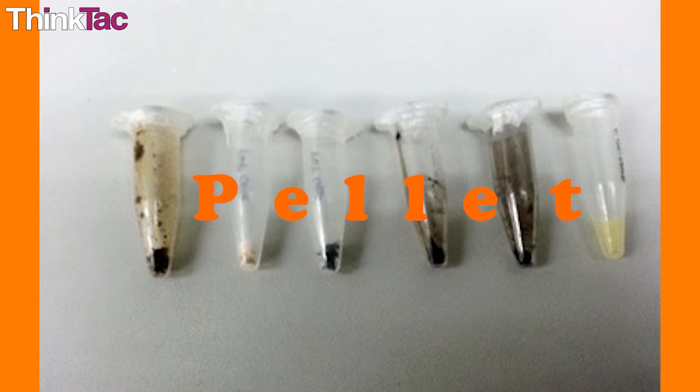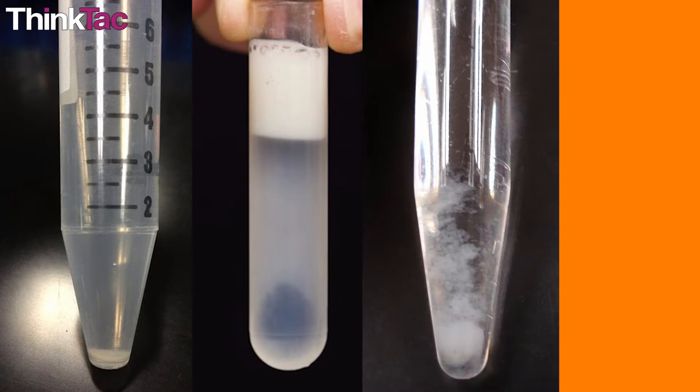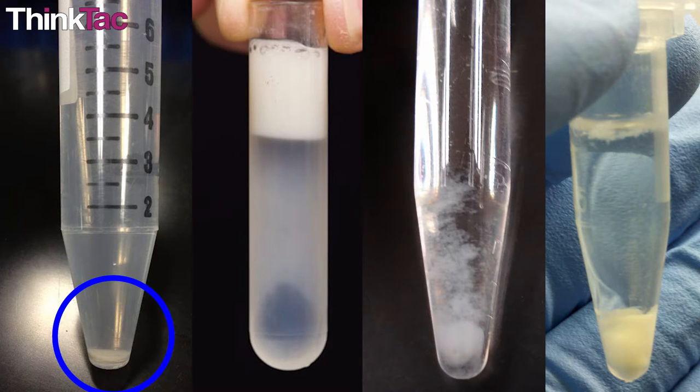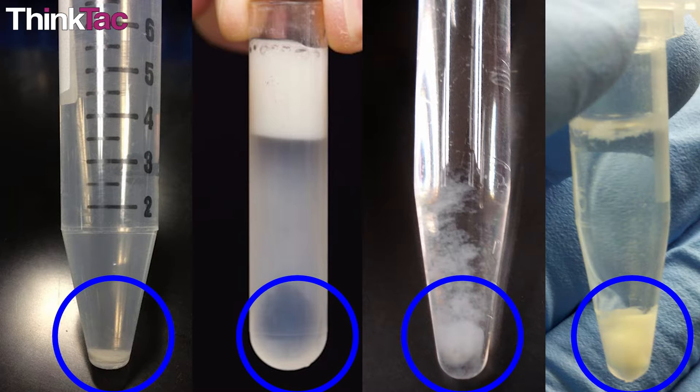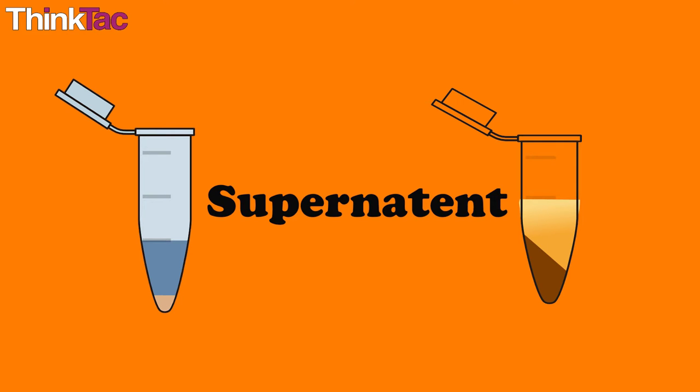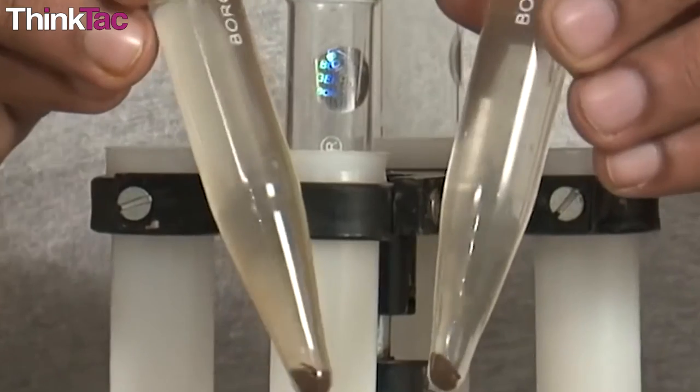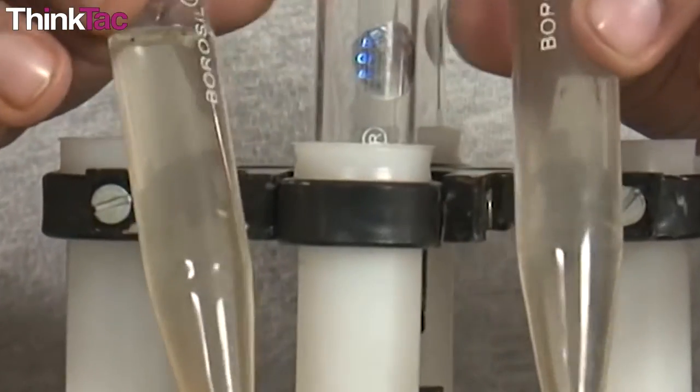Pellet: a small compressed hard chunk of matter that lies at the bottom of the tube after centrifugation. And a supernatant: the liquid that lies above a sediment or precipitate in the tube after centrifugation.